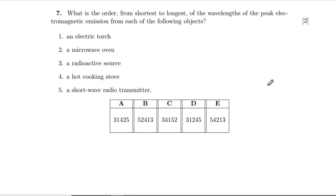What is the order from shortest to longest of wavelengths of peak EM emission? Electric torch, although depending on what they've made the bulb out of. Let's say it's visible. Microwave is obviously microwave. Radioactive, that's going to be short, let's go gamma. Hot cooking stove, infrared. Well, radio's got radio written in it. We want to go from shortest to longest, so it's going to be 3, 1, 4, 2, 5. That's the first one, which is A.